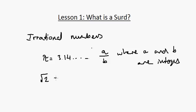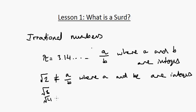You cannot write root 2 in the form a over b where a and b are integers. And another one is root 3. Now root 4 can be written as 2, so it's not a surd and it's not irrational.